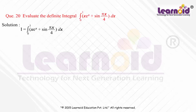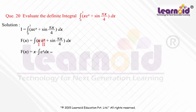First, find the indefinite integral f(x) using the product rule for the first term. f(x) equals x times the integral of e^x dx, minus the integral of d/dx of x times the integral of e^x dx, plus the integral of sin(πx/4) dx.